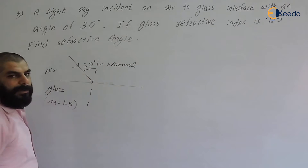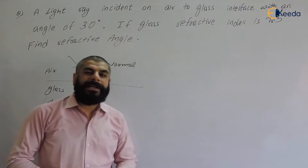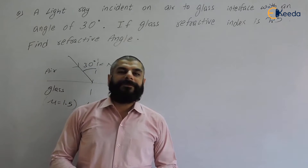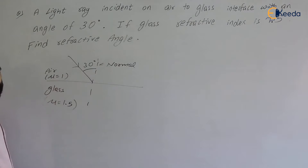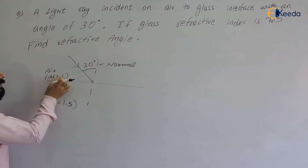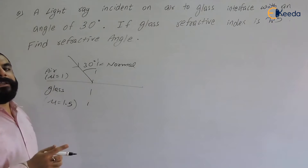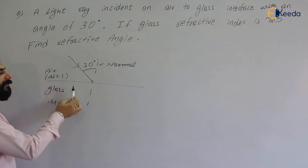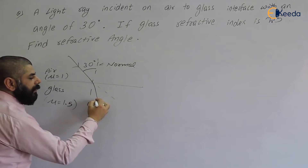The angle between the incident ray and the normal is called the angle of incidence, which is given as 30 degrees. The refractive index is defined as the ratio of the speed of light in air to the speed of light in that medium. For air, the refractive index equals 1. Since glass has refractive index 1.5, glass is the denser medium and air is the rarer medium. When light passes from rarer to denser medium, it bends towards the normal.